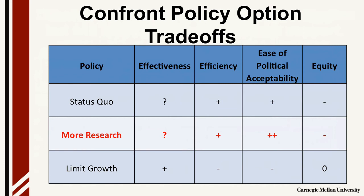Now, this is the result if you weighted all the criteria equally. Your policymaker, however, might say that one criteria might be more important than another — say efficiency, say they want the option with the lowest cost, or the most politically acceptable, or the most equitable. If that is the situation, you might shift the recommendation you make to your policymaker.